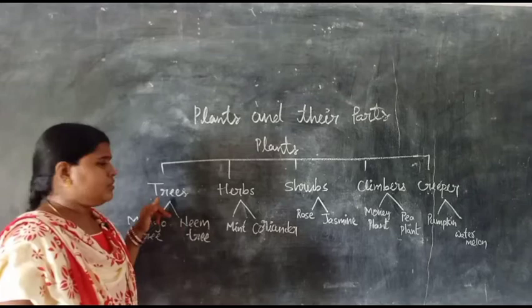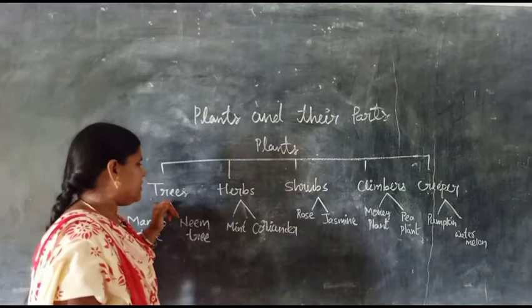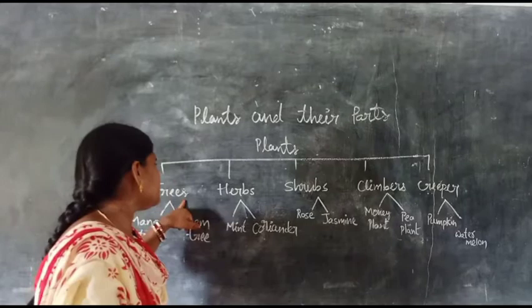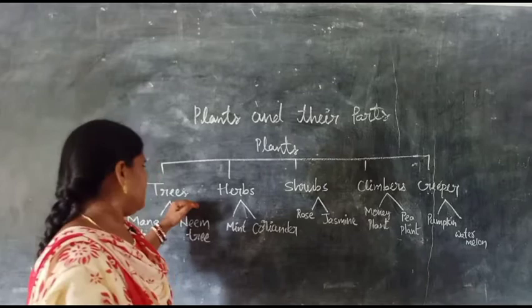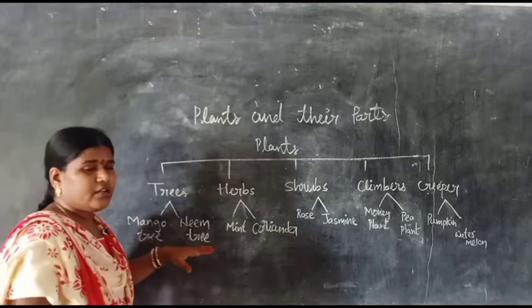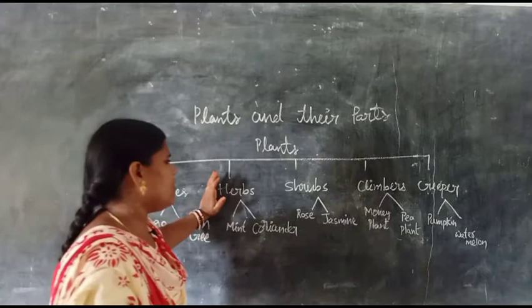Let us know about trees. Very strong plants are called trees. They can live for many years and their stems are very strong. Examples of trees are the mango tree and the neem tree.